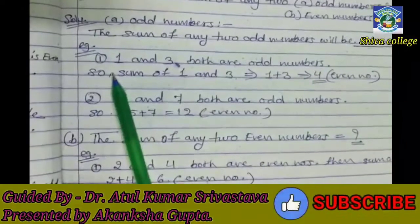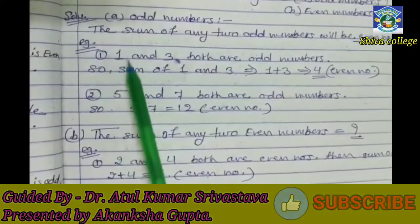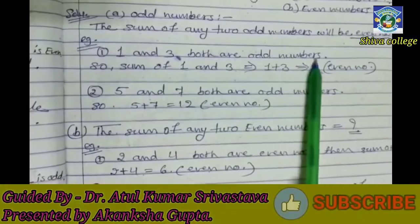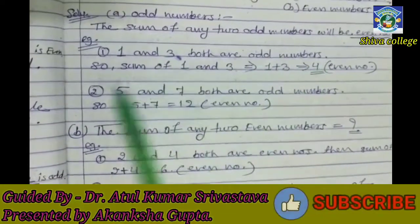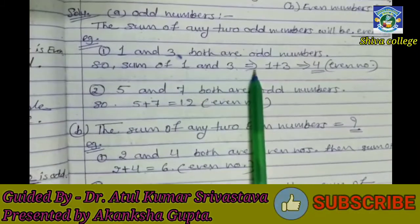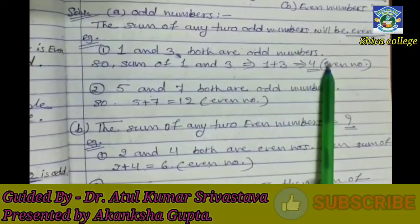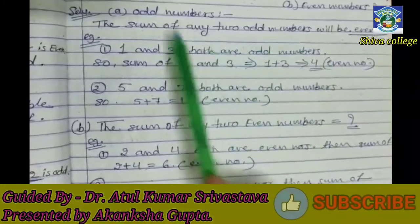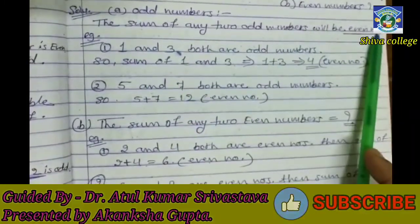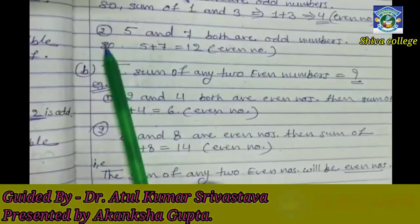Let's see the example. First, 1 and 3 — both are odd numbers. Sum of 1 and 3 equals 1 plus 3 equals 4. 4 is an even number. So our statement — the sum of any two odd numbers will be even numbers — is verified.